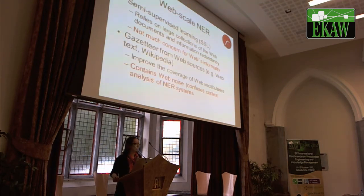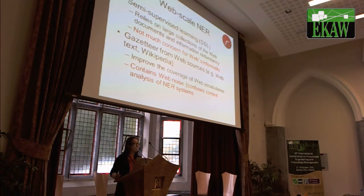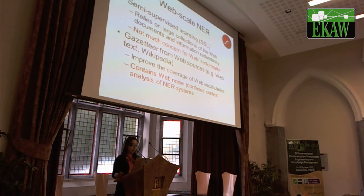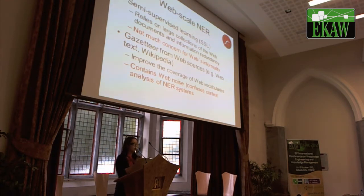There have been two types of approaches for web-scale NER. One is semi-supervised learning, which usually relies on large amounts of web resources and web redundancy to improve precision, but doesn't address web informality much — those approaches usually use more journalistic text rather than actual web text. There are also some studies improving gazetteers from web resources, which improved coverage of web domains and vocabularies, but still use a pretty simple approach so they contain lots of web noise, which confuses analysis methodologies in NER systems.